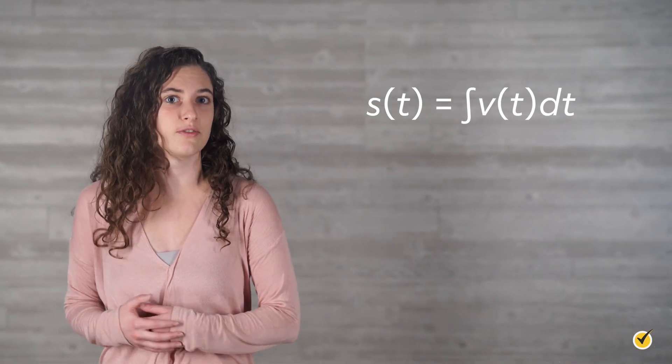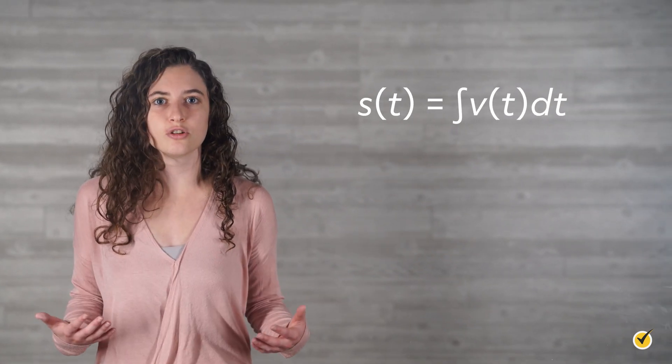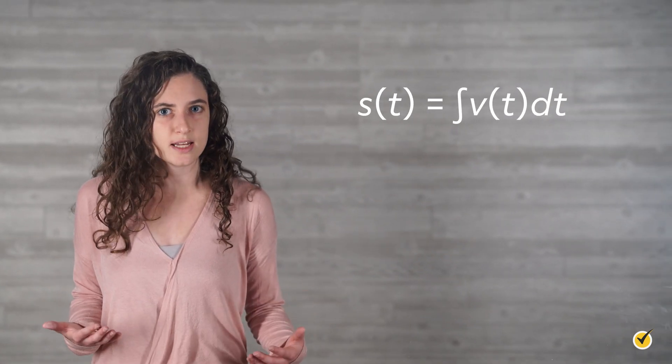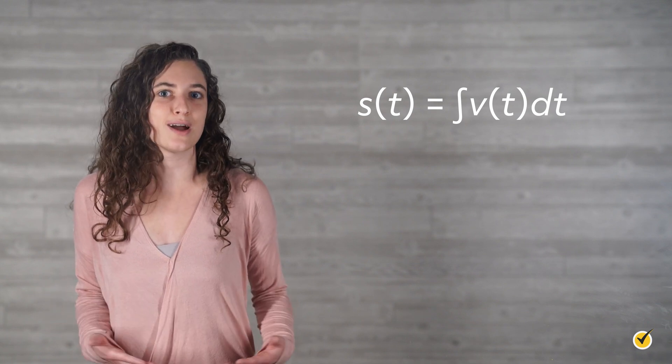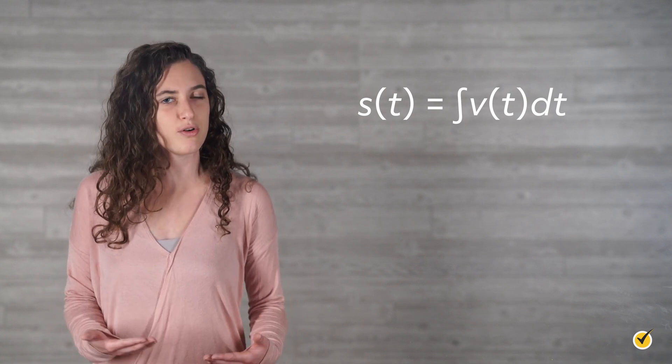If we think of velocity as a rate of change in an object's position, then we can understand that the object's velocity can be found by taking the derivative of the object's position function. Conversely, if we have the object's velocity function v, we can get the position function by taking the integral of v. If the integral is bounded to specific starting and ending times, then the solution is a number describing the displacement of the object over that time.